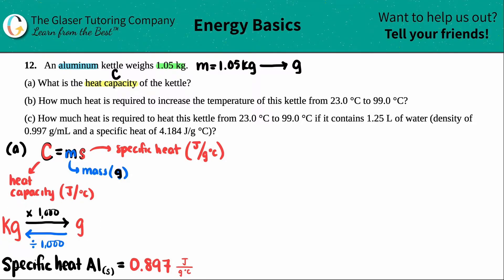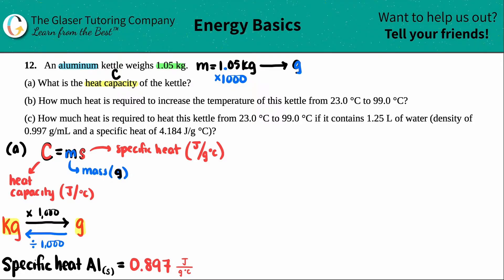There's a quick cheat sheet: if you're going from kilograms to grams, all you have to do is take your kilogram value and multiply it by 1000. Similarly, you could just take the decimal and move it to the right three times and fill in a zero as a placeholder. Either way, 1.05 times 1000 gives 1,050 grams.